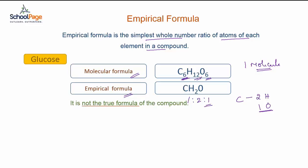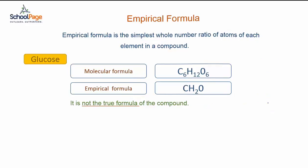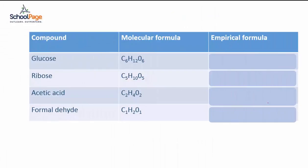Besides, 2 or more compounds can have the same empirical formula. Consider these examples: glucose, ribose, acetic acid and formaldehyde. Observe the molecular formula of these compounds. They all are different.